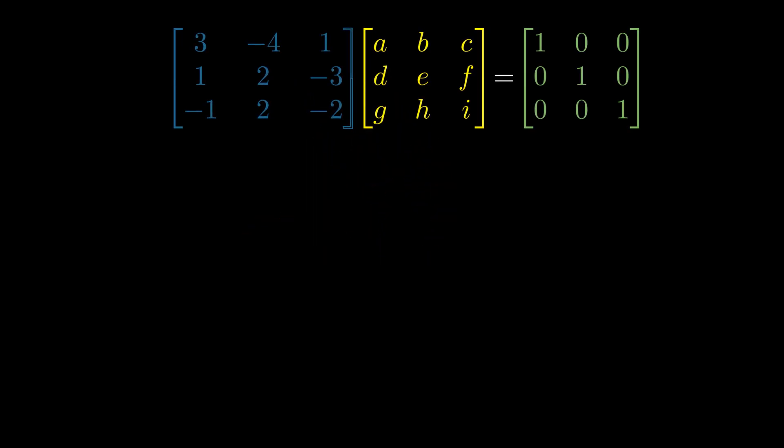Matrix multiplication is defined by the multiplication of rows by columns. To get the first entry in the resultant matrix, we multiply the first row by the first column: take 3 times A, then negative 4 times D, then 1 times G, and add them all together. The second entry is first row by second column, third is first row by third column, and so on.